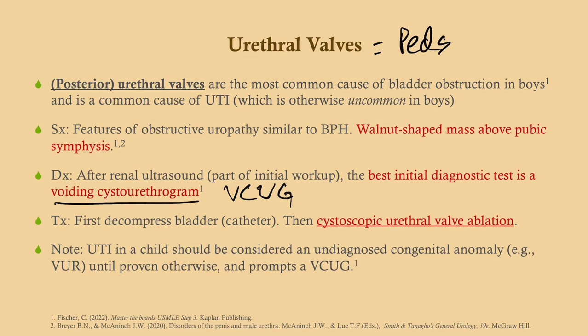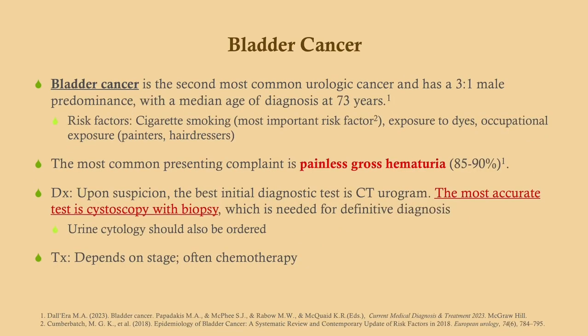A UTI in a child should always raise concern for a congenital anomaly until proven otherwise — always get a voiding cystourethrogram. Bladder cancer is the second most common urologic cancer with a male predominance, typically affecting older men. It is usually transitional cell carcinoma. The most important risk factor is cigarette smoking; exposure to dyes is also notable — hairdressers are a classic at-risk occupation.